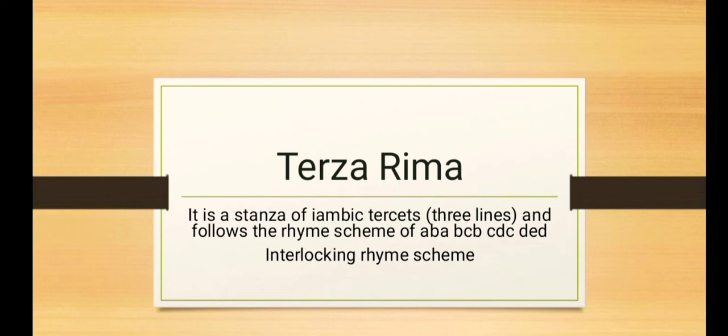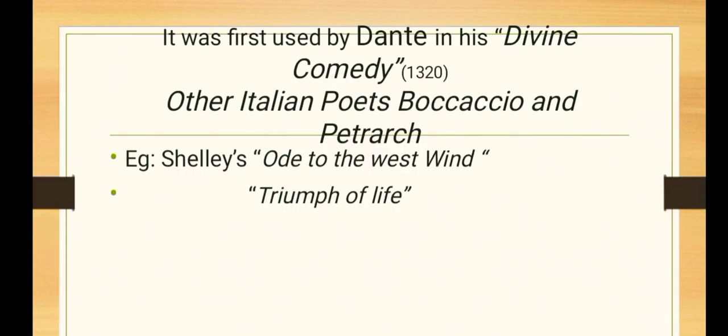You see this is an interlocking rhyme scheme. Because ABA and then B goes to the next stanza BCB, then C goes to the next stanza CDC, and then D goes to the next stanza, and so on. This is the basic pattern of Terza Rima. It was first used by Dante in his Divine Comedy in 1320, and other Italian poets like Boccaccio and Petrarch used it a lot. It was used by Shelley in his poems Ode to the West Wind and Triumph of Life.